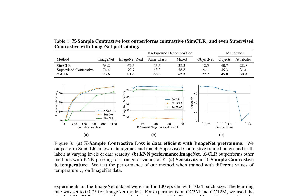In Table 1, X-CLR is compared with SIM-CLR and Supervised Contrastive Loss on the Background Decomposition MIT States benchmark with ImageNet pre-training. X-CLR outperforms both in most scenarios. Figure 3A illustrates the data efficiency of X-CLR, where it outperforms SIM-CLR in low data regimes and matches Supervised Contrastive trained on ground truth labels at varying levels of data scarcity. Figure 3B shows K-nearest neighbors performance on ImageNet, where X-CLR outperforms other methods across a range of values of K.